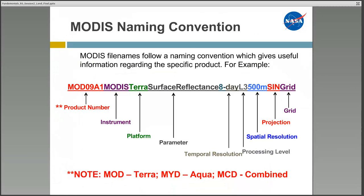The MODIS naming convention can be quite confusing, but it's important to understand the information within the names of the MODIS products when you've downloaded them from the website. The first part of the name is the product number. It could be MOD, which means it comes from the Terra satellite; MYD, which means it comes from the Aqua satellite; or MCD, which means it's a combined Terra and Aqua image. The next part of the name is the instrument it comes from — MODIS — followed by the platform.